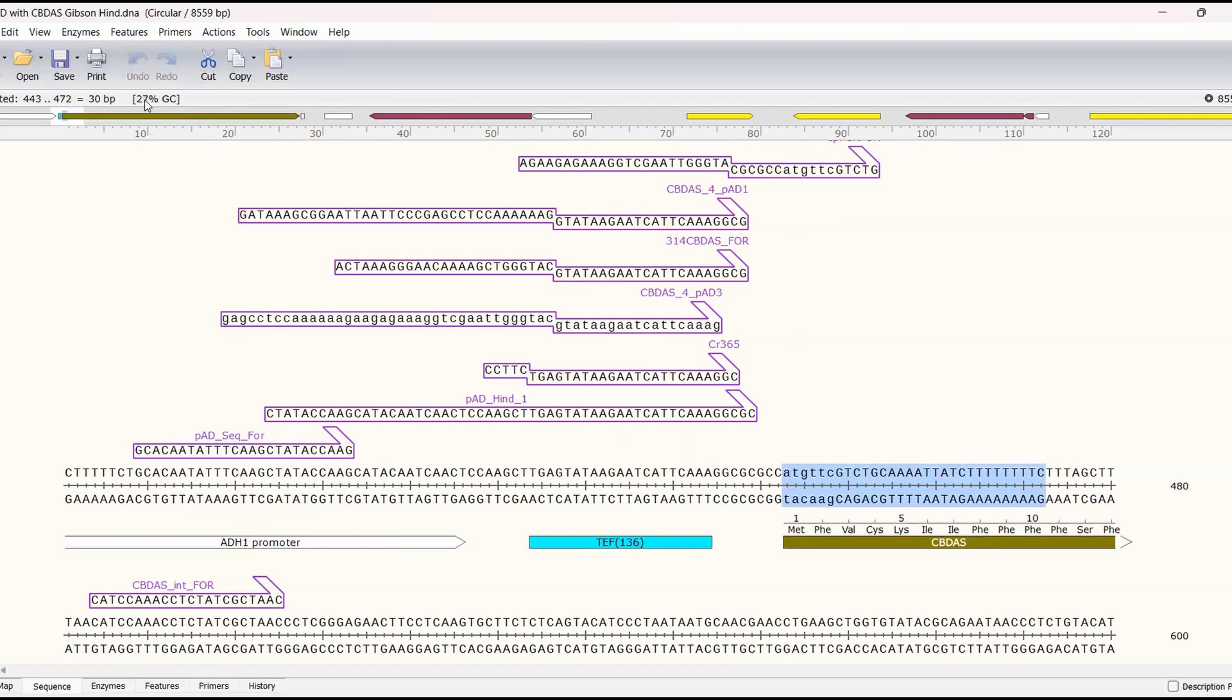Right for example we have this huge T repeat region which is not very good. You can see up here in the top left that our GC content is 27 percent which again we're looking for a GC content of 40 to 60 percent so that's really low and we're also starting this primer with an A so this is not the best primer especially to start out but this is a really real world example of the problems that you run into when you're designing primers especially when you need to amplify a very particular region of DNA.